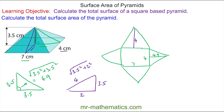So now we can work out the area of every face. We know the rectangle is 28. We know this slant height is also 4, so seven times 4 divided by 2 is 14. The top triangle will have an equal area.